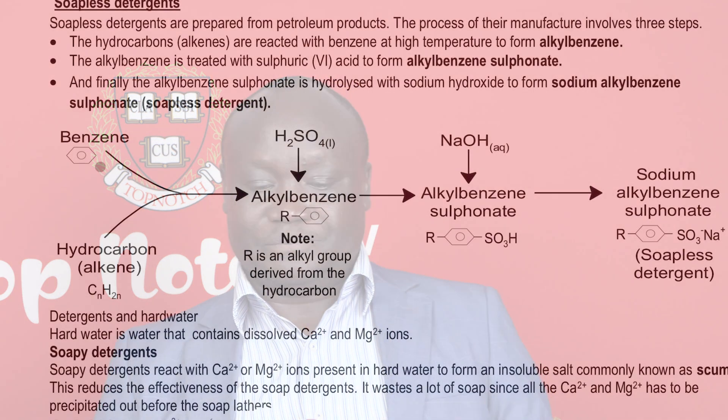We are going to encounter benzene again when we discuss the formation of a certain type of polymer. After that, the alkyl benzene that has been formed is reacted with sulfuric acid to form alkyl benzene sulfonate.